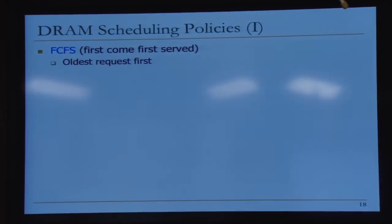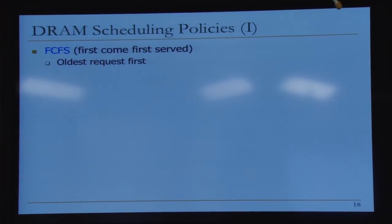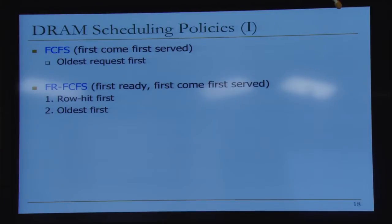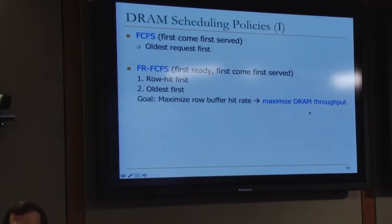So what are the DRAM scheduling policies? The simplest one is first come, first served — you just service whatever comes to you first. That's really not scheduling. What we've seen is first-ready, first-come-first-served: you basically prioritize row hit requests. If a request hits in the row buffer, you know the status and you prioritize that request over others. And everything else being equal, you prioritize older requests. The goal is to maximize the row buffer hit rate, because row buffer accesses are much faster; as a result, you also maximize DRAM throughput.